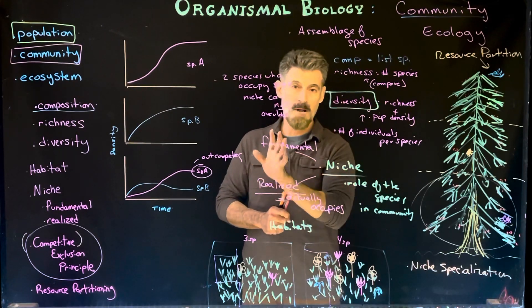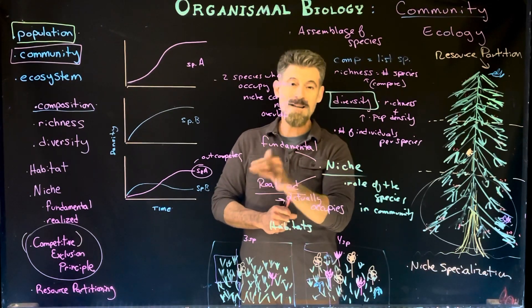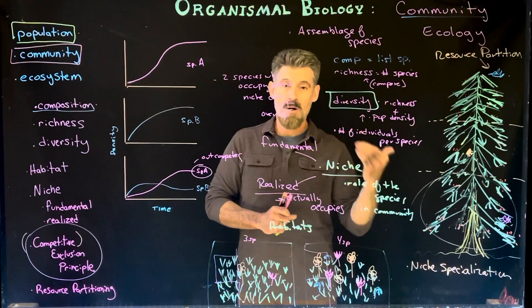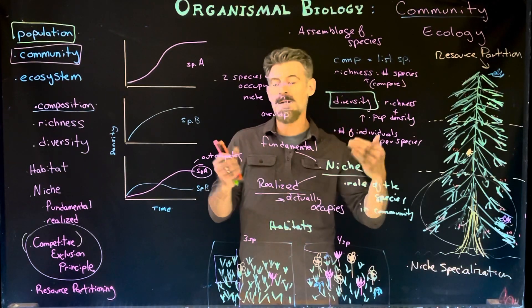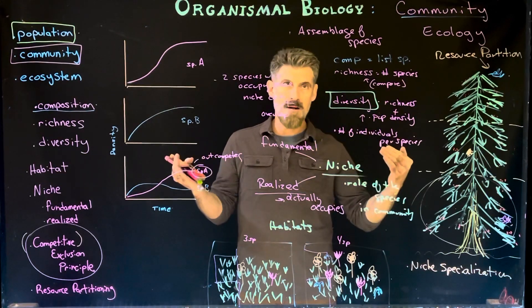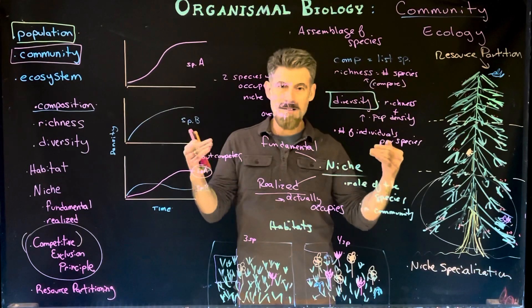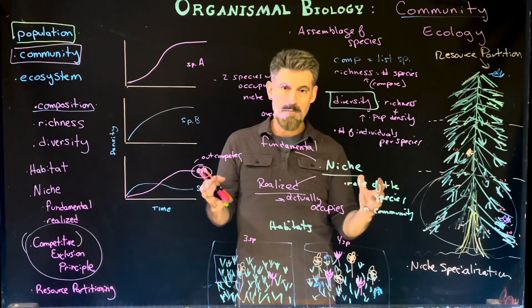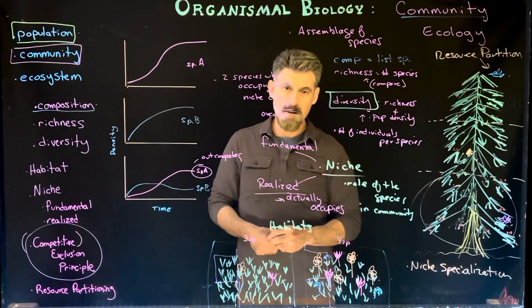Next we'll be moving on to competition specifically and other sorts of interactions like predation and parasitism — the other kinds of interactions that different species have within a community.